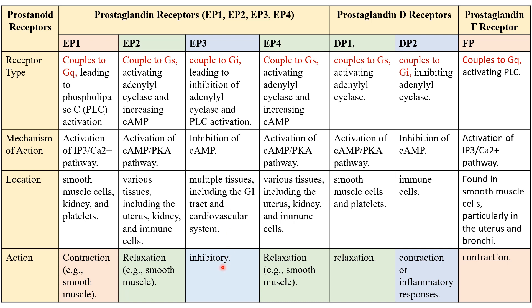EP3 receptors are multitaskers — they can cause either contraction or relaxation and are found in various tissues with different functions adapting to the body's needs. When the EP receptors receive their signals, a series of commands goes to the body — contract here, relax there — playing a crucial role in regulating muscle action and blood flow, contributing to overall balance in the system.